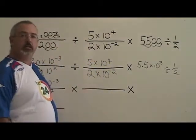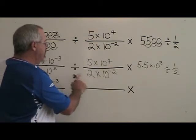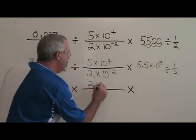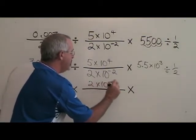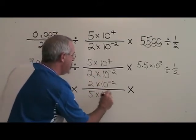The second fraction has to turn upside down so that I can multiply instead of dividing. So the top becomes 2 times 10 to the negative 2 and the bottom becomes 5 times 10 to the 4.